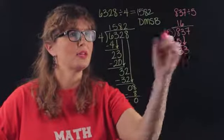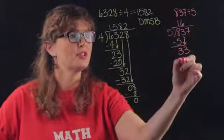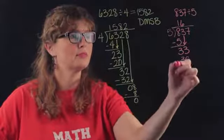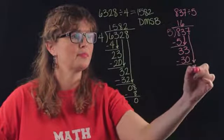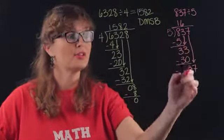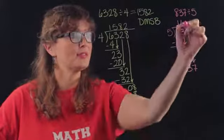Multiply, six times five is thirty. Subtract, bring down. Five goes into thirty-seven, here we're at divide, seven times.